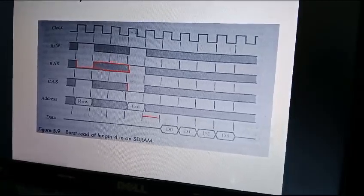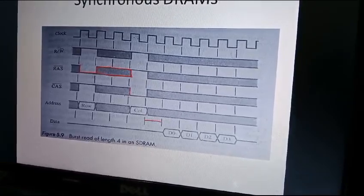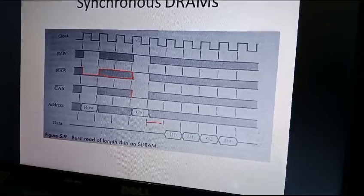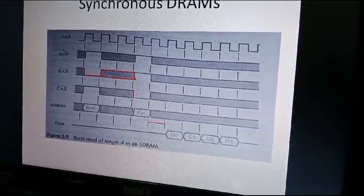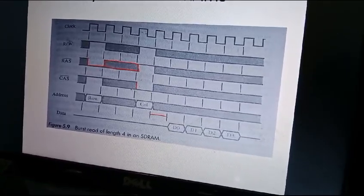Once again the column counter will increment the column and apply it to the column decoder, which will send that address and get a new byte. Here four successive bytes are sent from memory one after another.